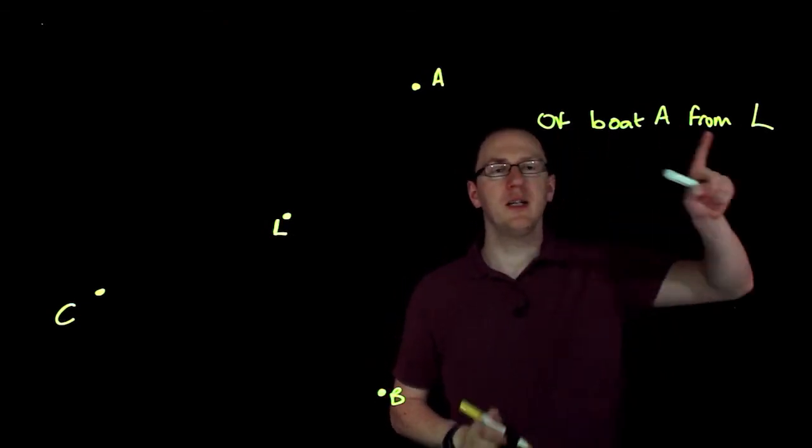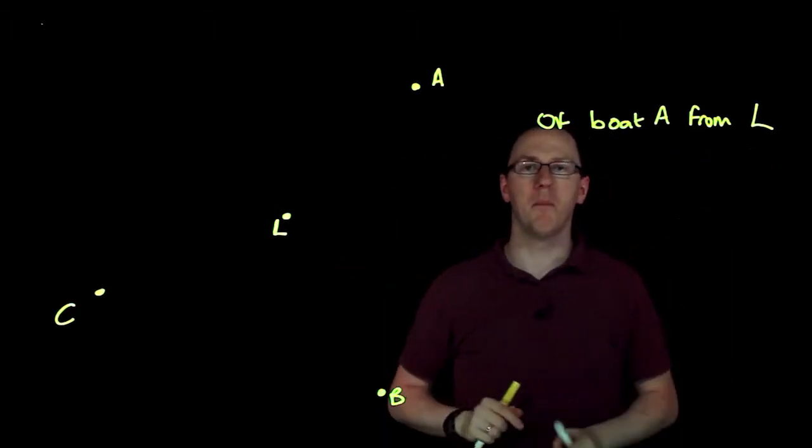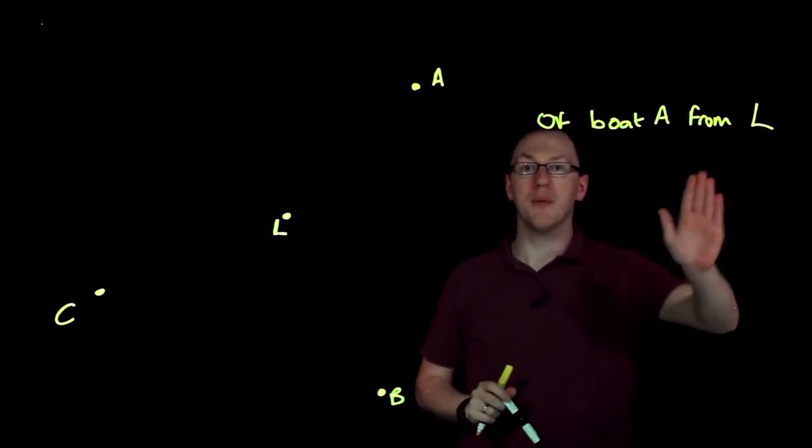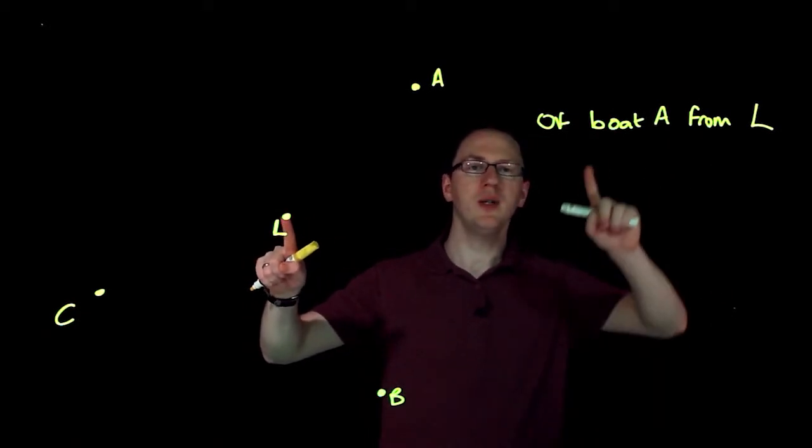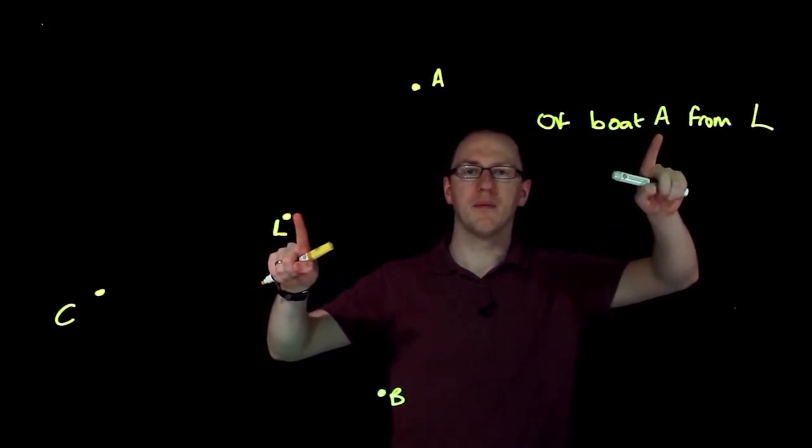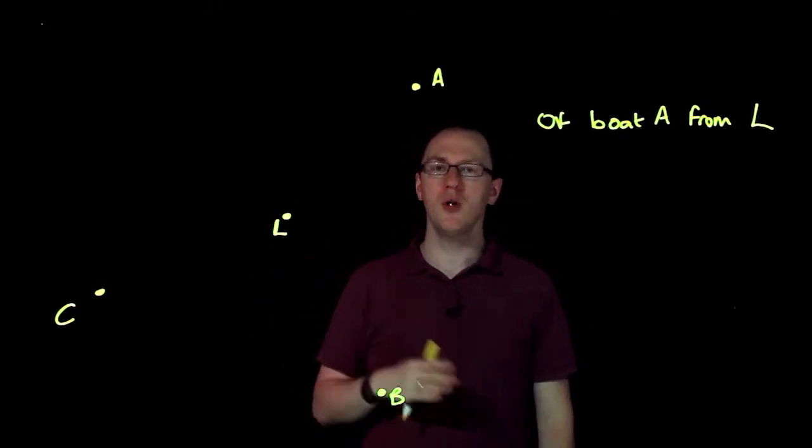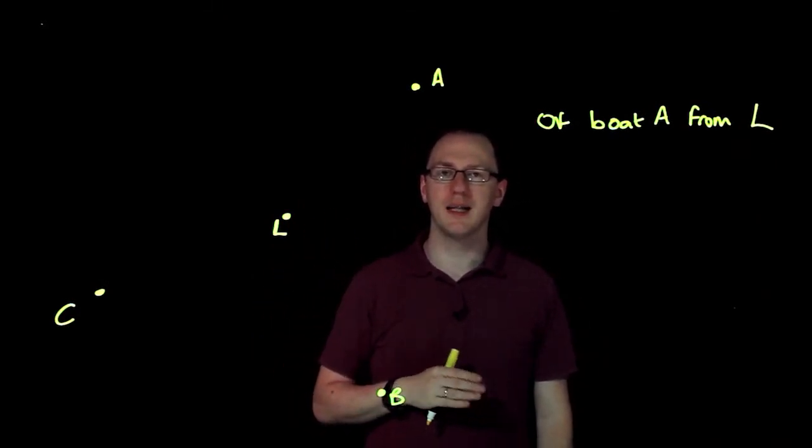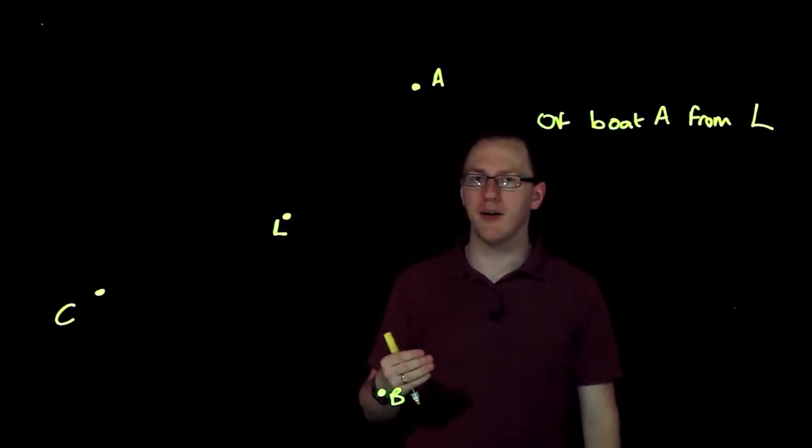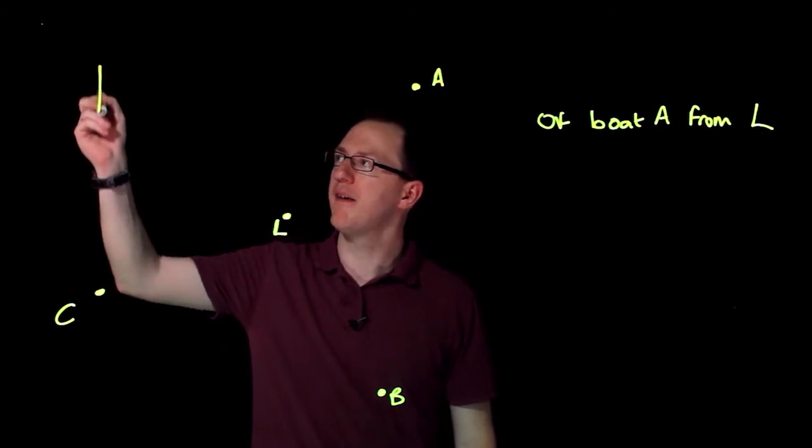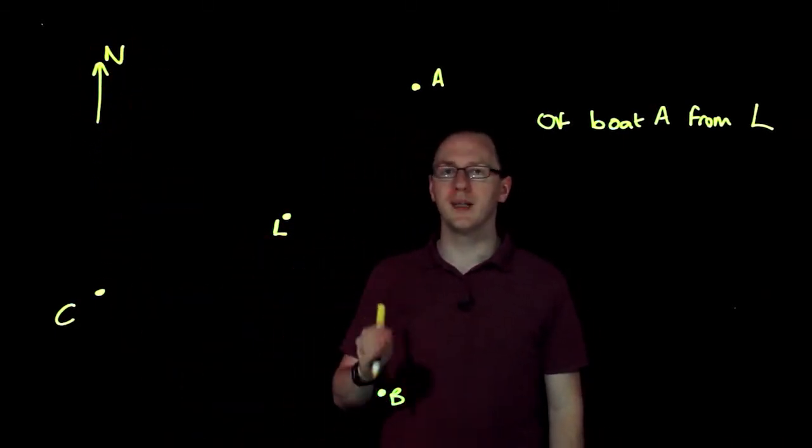Now, these two words appear when we're trying to measure bearings of and from. From is where we're standing. So we're going to be standing in the lighthouse and we're measuring the bearing of A. At the moment, north isn't marked in my diagram. In a question I'll normally have it marked, we need to find out where it is. So I'm going to consider north as being straight up.